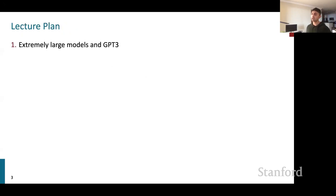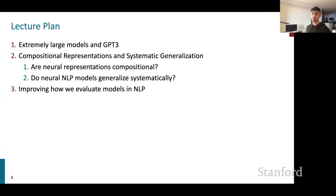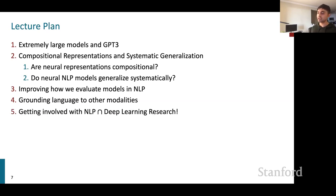For today, we'll start by talking about extremely large language models and GPT-3, which have recently gained a lot of popularity. We'll then take a closer look at compositionality and generalization of neural models. While transformer models like BERT and GPT have really high performance on benchmarks, they still fail in surprising ways when deployed. We'll then talk about moving beyond text through language grounding, and I'll give practical tips for neural NLP research and your final project.